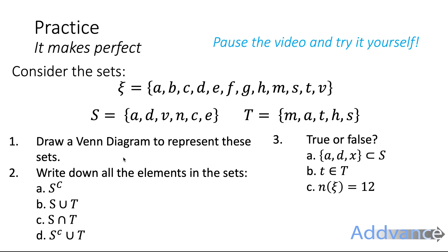That is everything I wanted to show you in today's video. I've got some practice questions for you to try here. I'd like to start by drawing a Venn diagram for these sets. That's the universal set of letters here, where S is A, D, V, N, C, E, and T. The set T is M, A, T, H, S. Put these elements inside a Venn diagram, draw it carefully, and remember to write the elements in both inside the overlap. Then, I'll write down all the elements in these sets: C complement, S complement, S union T, S intersection T, S complement union T. Then, finally, I'd like to answer true or false to these questions here. A, D, and X belongs to S. T belongs to capital T. And the number of elements in the universal set is 12. Is that true or false? So pause the video, take the time. It should take about three or four minutes to complete that. And when you're ready, you can see the answers in three, two, one.